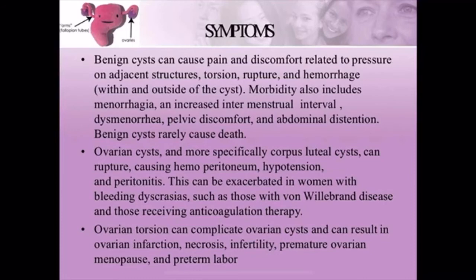More specifically, corpus luteal cysts have a tendency to rupture. When they rupture, the patient will experience hemoperitoneum, hypotension, and peritonitis. This can be exacerbated in women with bleeding disorders, such as those with von Willebrand disease and those receiving anticoagulation therapy. Von Willebrand disease affects clotting factors. Ovarian torsion can also complicate ovarian cysts and can result in ovarian infarction, necrosis, infertility, premature ovarian failure, and preterm complications.